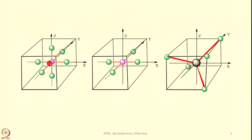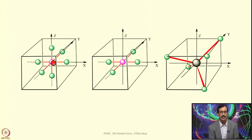Looking at the octahedral molecule, we should also consider the Cartesian coordinates with the metal center at the origin. We can see how the ligand approach directions coincide with these Cartesian coordinates. This is important because when we place all 5 d orbitals at the Cartesian coordinate, we know that d z² is along the z axis, d x²-y² is along the x and y axes, and d xz, d yz, and d xy are between the respective axes — this is how their orientation looks.